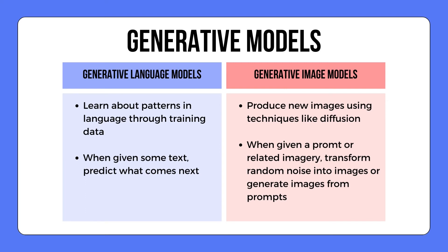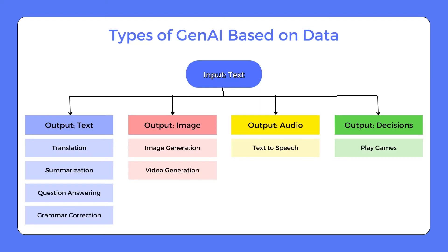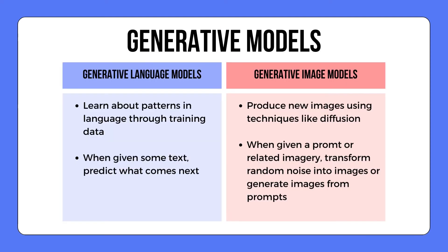Let's dig a little deeper into each of them. As previously mentioned, generative language models focus on grasping the inherent structure and patterns within the data, then leverage these learned patterns to generate novel responses or content that often closely resemble the original data. A generative language model takes text as input and can output more text, an image, audio, or decisions. For example, under output text, question answering is generated; and under output image, a video is generated. Large language models are a type of generative AI because they generate novel combinations of text in the form of natural-sounding language.